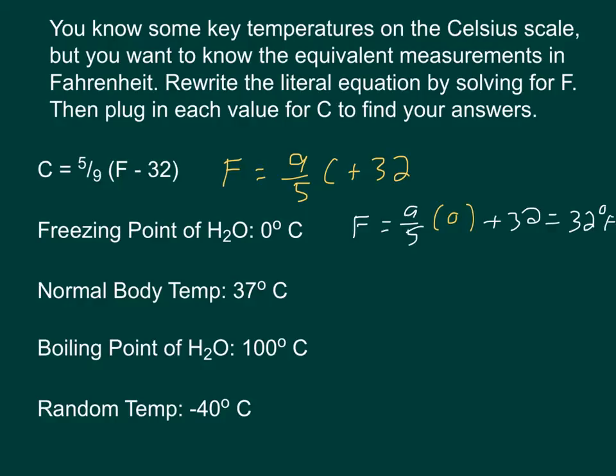Normal body temperature, 37°C. If I plug in here, I have 9/5 times 37 plus 32. That's just some quick work on a calculator. 9/5, which is equivalent to 1.8, times 37 gives me 66.6. Adding that to 32 gives me 98.6°F, which is the normal body temperature in Fahrenheit.